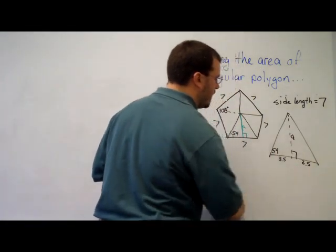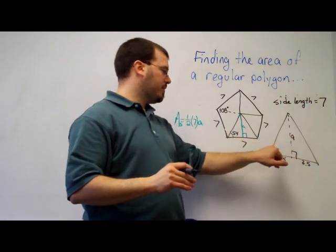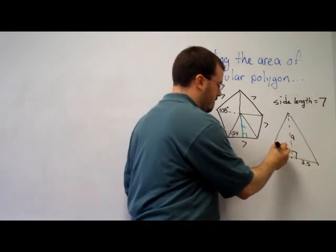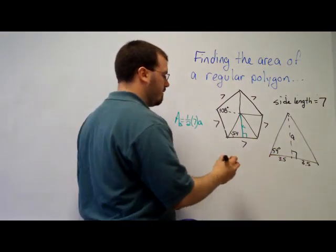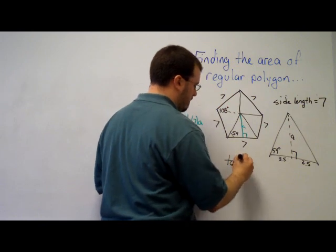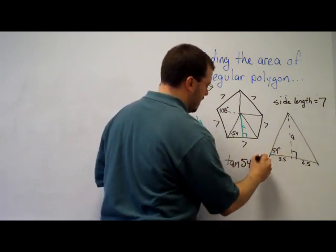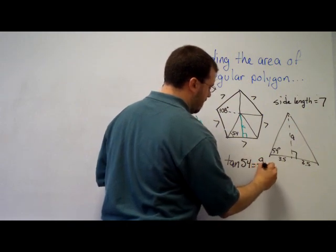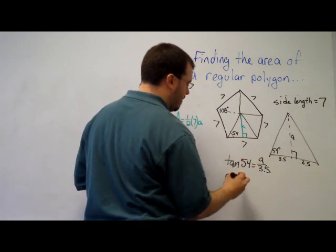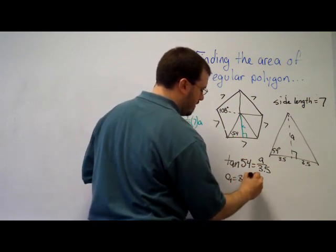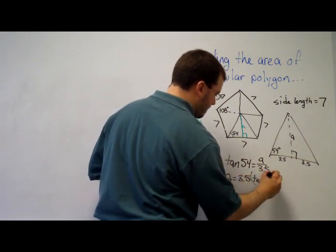And here's where a little bit of trig is involved. I want to find the side opposite of 54 degrees, and I know the side adjacent to 54 degrees. So I can set up a tangent equation. Tangent of 54 is equal to a, the opposite side, over 3.5, the adjacent side. So a is equal to 3.5 times the tangent of 54 degrees.